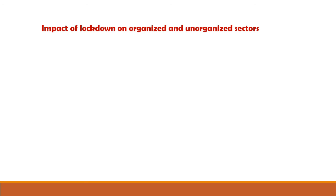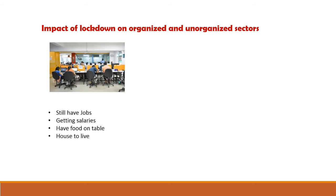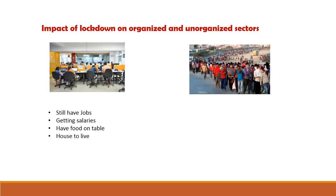At the present time, as you all know, lockdown is going on. We can see a clear impact on the lives of people working in both organized and unorganized sectors. In the organized sector, people still have jobs, they are getting their salaries, they have food on the table and houses to live in. But in the unorganized sector, there is no job, no wages, no food to eat, and no place to live. As you are aware from the migrant news, people are even forced to walk to their hometowns on foot, with no means of transportation available. The condition of people working in the unorganized sector is very, very bad.